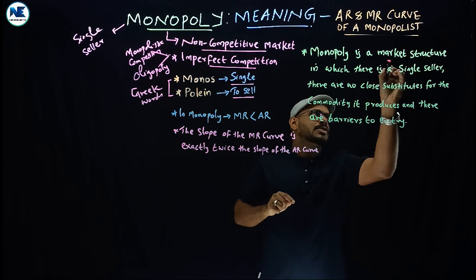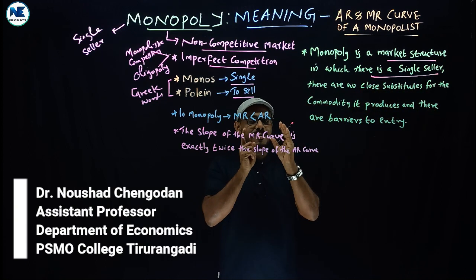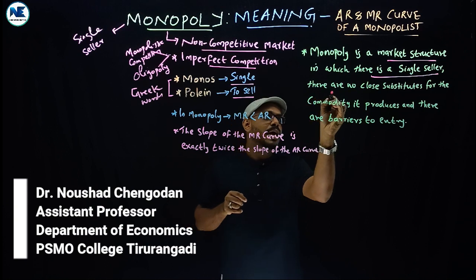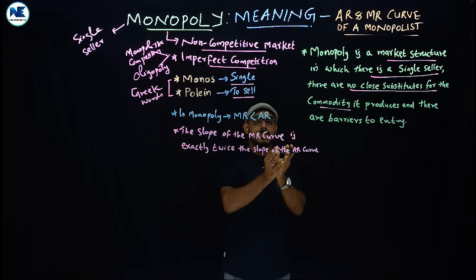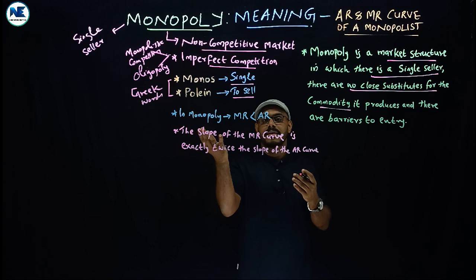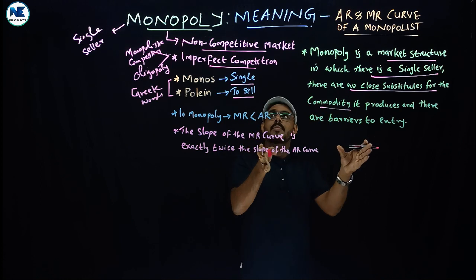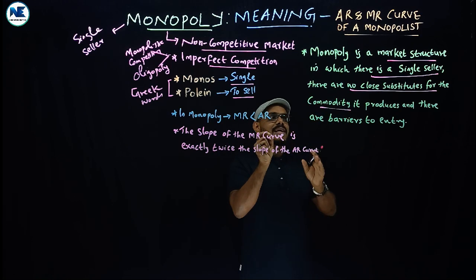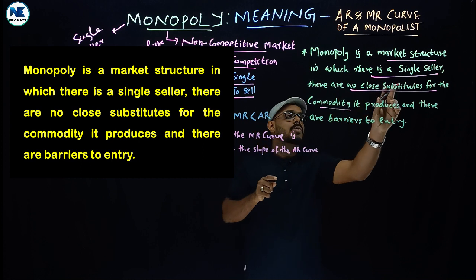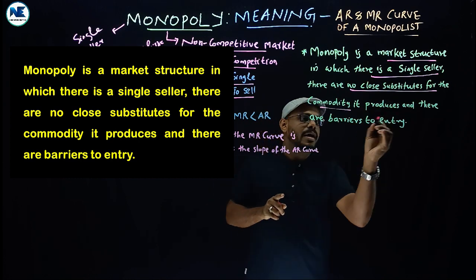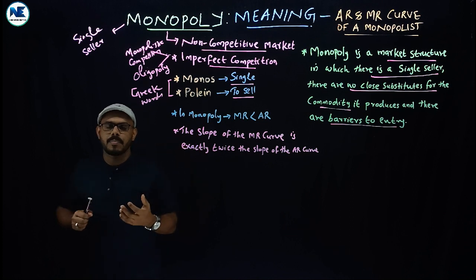Monopoly is a market structure in which there is a single seller, and there are no close substitutes for the commodity. In a competitive market, tea and coffee can be substitutes, but in a monopoly market there is a unique product with a single seller, no close substitutes for the commodity it produces, and there are barriers to entry. We will discuss the features of monopoly in the coming video.